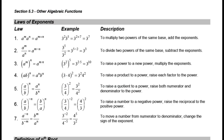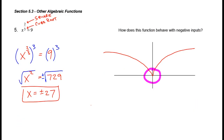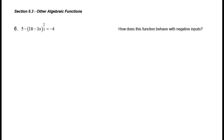Alright folks, let's pick right up where we left off. We're done with examples 4 and 5. Let's take a look at example 6. Our hint for this problem is: how does this function behave with negative inputs? Well, we've already talked about raising something to the 2/3 power, so this function behaves just fine with negative inputs. We have no issue there.